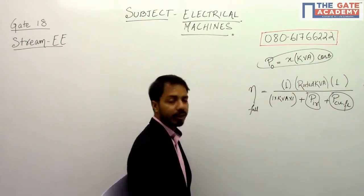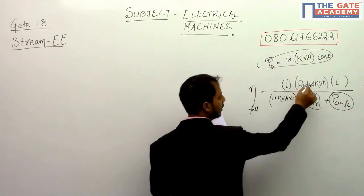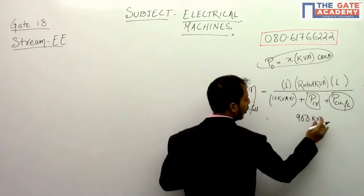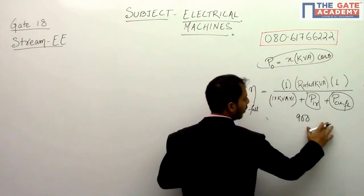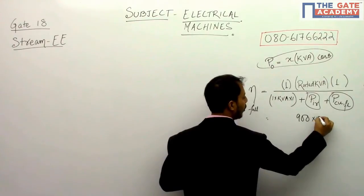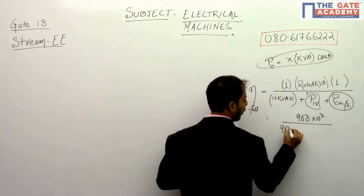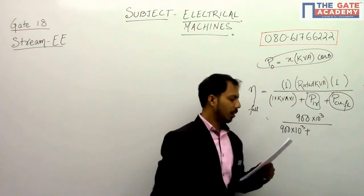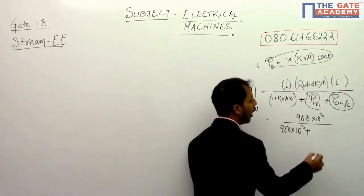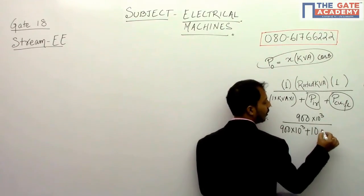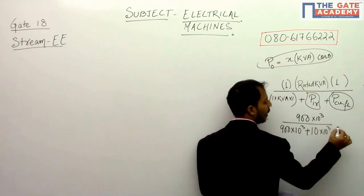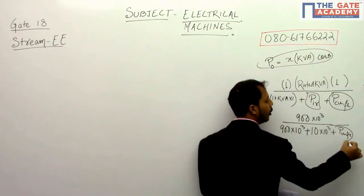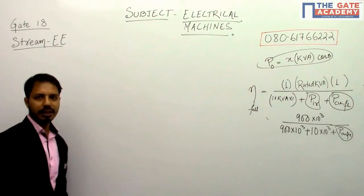The rated value is 900 kVA, so the expression becomes 900 × 10³ divided by (900 × 10³ plus iron loss plus copper loss at full load). We already know the iron loss is 10 kW, so now we need to find the full load copper loss.